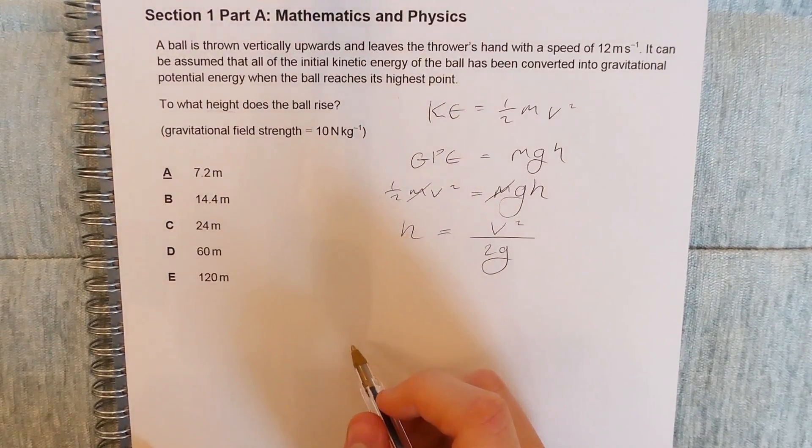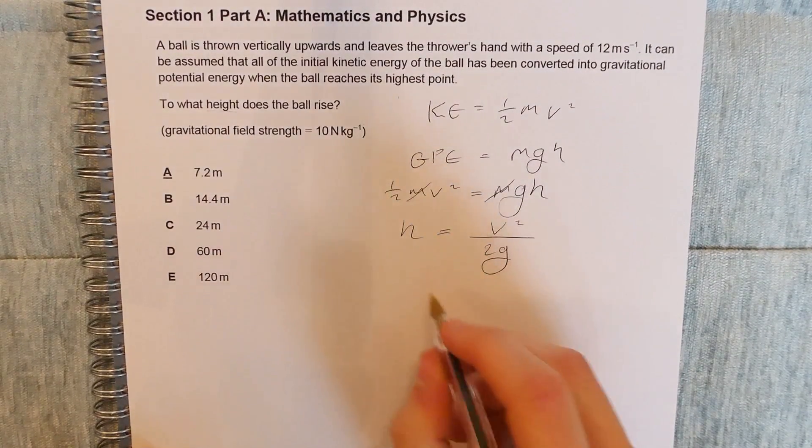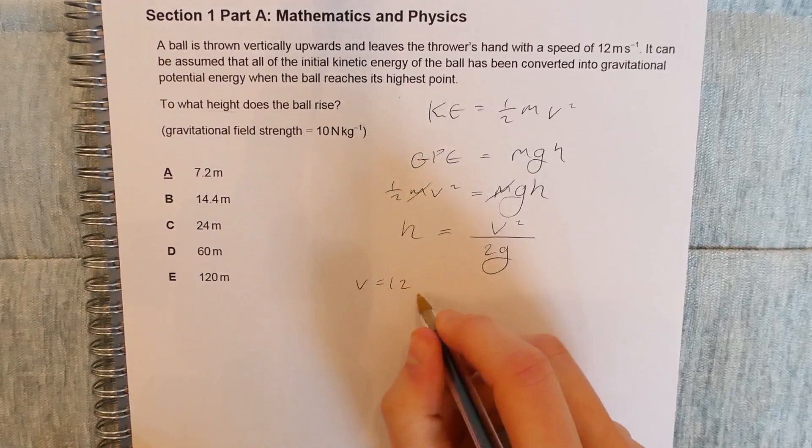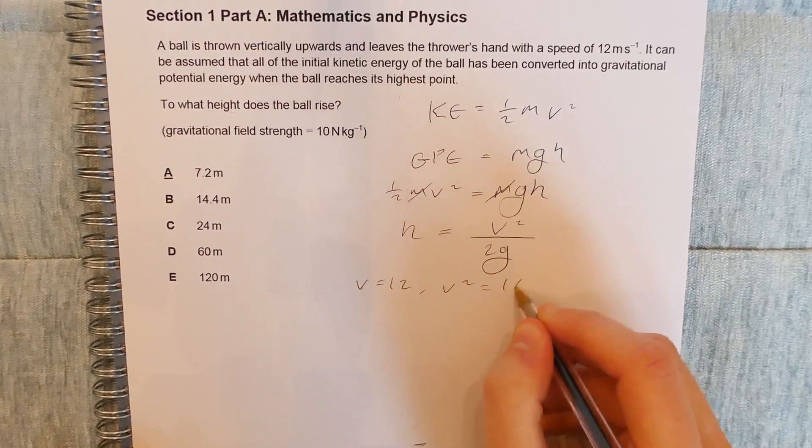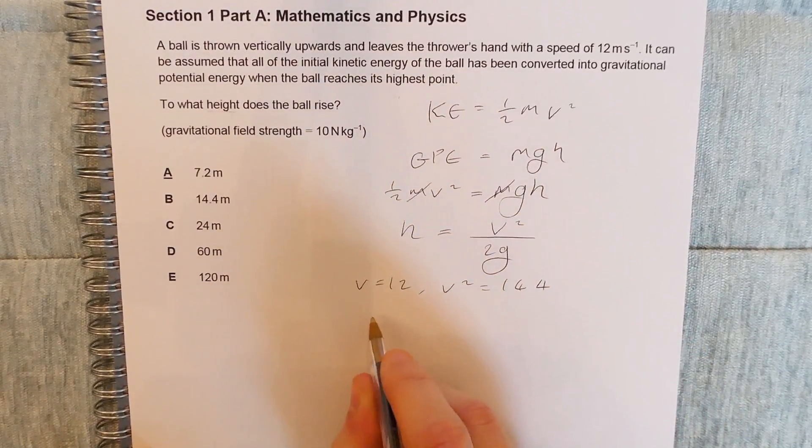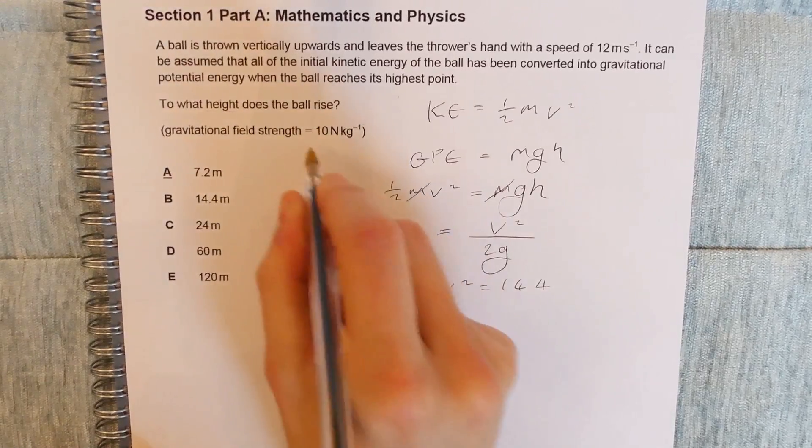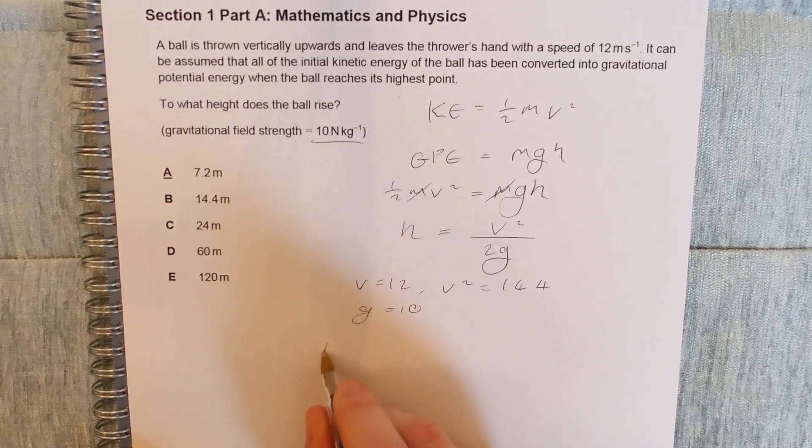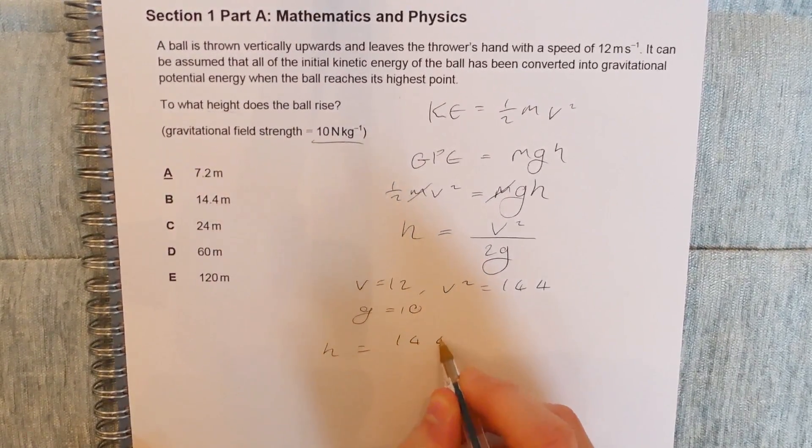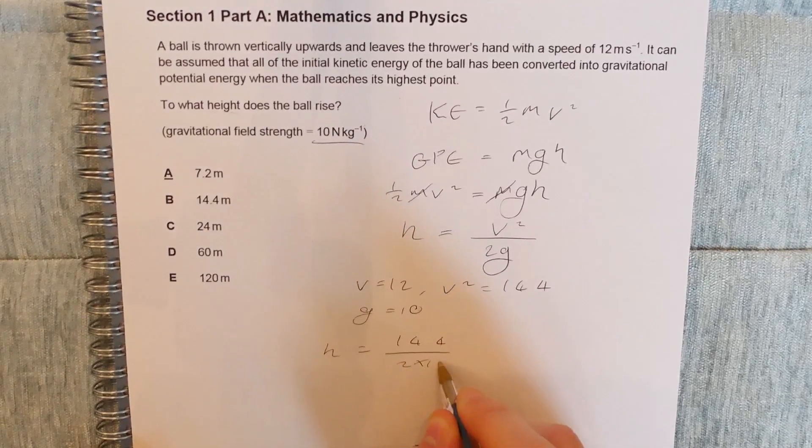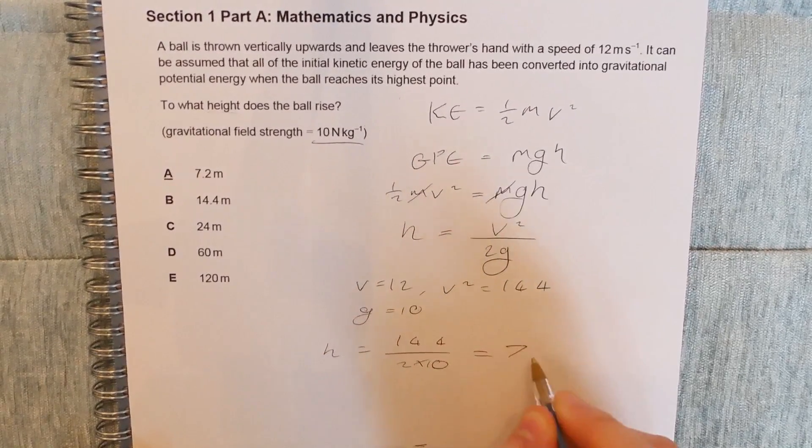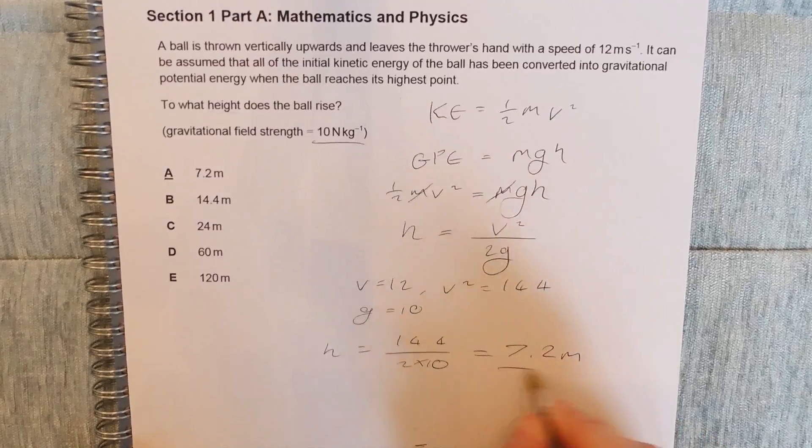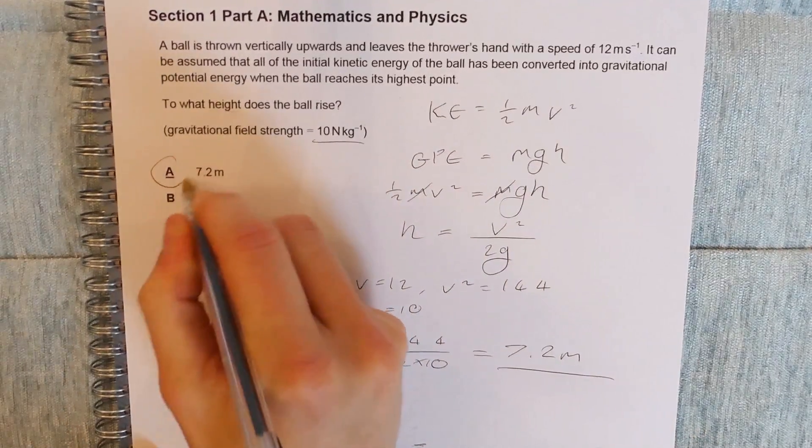Now, beyond this point, it's just a matter of subbing in some values. So v is equal to 12, hence v squared is equal to 144, and g is equal to 10, as given here in the question. So therefore, h is equal to 144 over 2 times 10, which is equal to 7.2 meters. Therefore, our answer is going to be A.